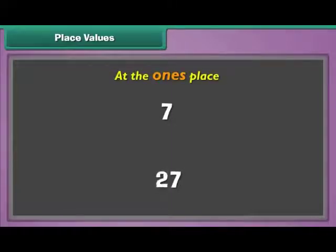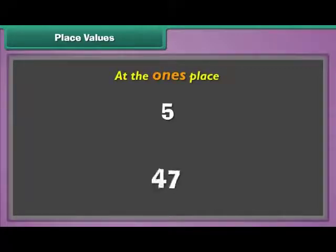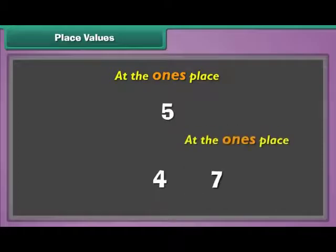Single-digit numbers have only one digit at the one's place. Two-digit numbers have one digit at the one's place and another at the ten's place. For example, number five has only one digit at the one's place. Number forty-seven has two digits: four and seven.